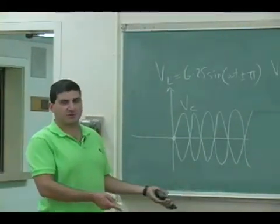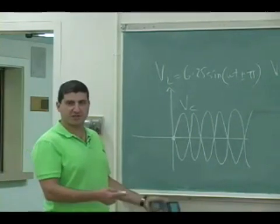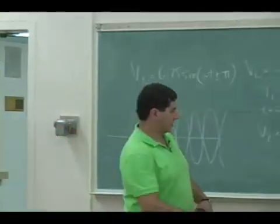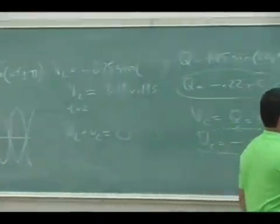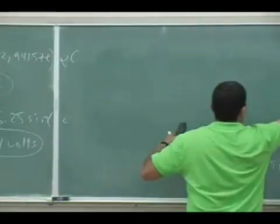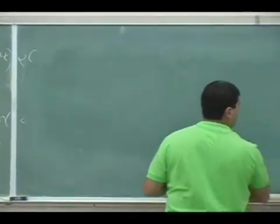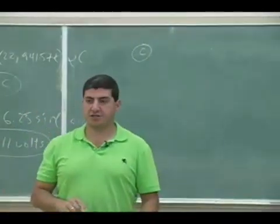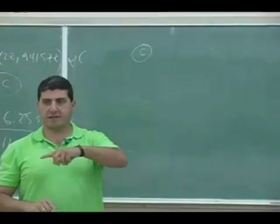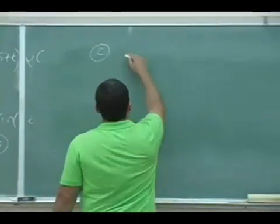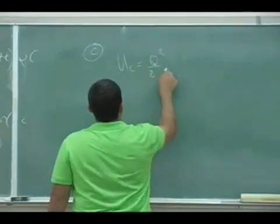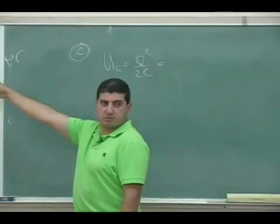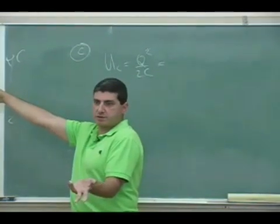But that doesn't mean the battery is zero. You simply can't add them. So the energy of the capacitor. Remember they give energy to each other. So energy of the capacitor is q squared over 2C.